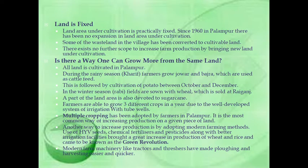Another way to increase production is by adopting modern farming methods using HYV seeds. HYV seeds, chemical fertilizers and pesticides, along with better irrigation facilities, brought a great increase in production of wheat and rice — a phenomenon known as the Green Revolution. What is the Green Revolution? More crops are produced with the help of chemical fertilizers, pesticides and HYV seeds — that is, high-yielding variety seeds. Modern farm machinery like tractors and threshers have made ploughing and harvesting easier and quicker.